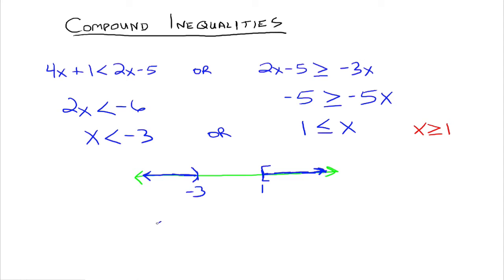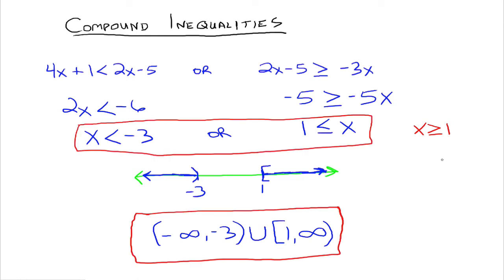In interval notation, negative infinity to negative 3 is the first interval, and 1 to infinity is the one on the right, with the union symbol in between them. So the 'or' means we're looking for all numbers that satisfy this inequality or that inequality. If you take any number less than negative 3, it makes the left inequality true — that's all we need.